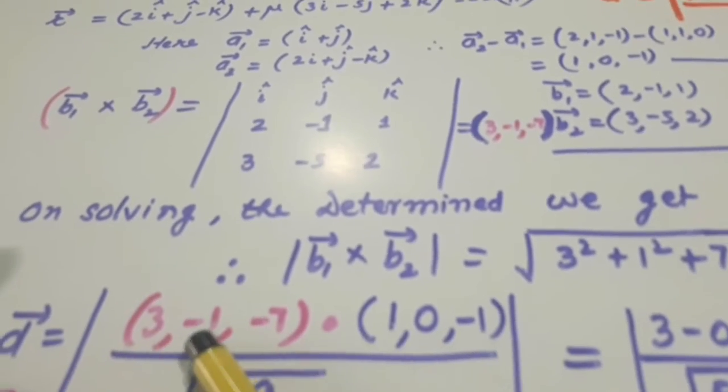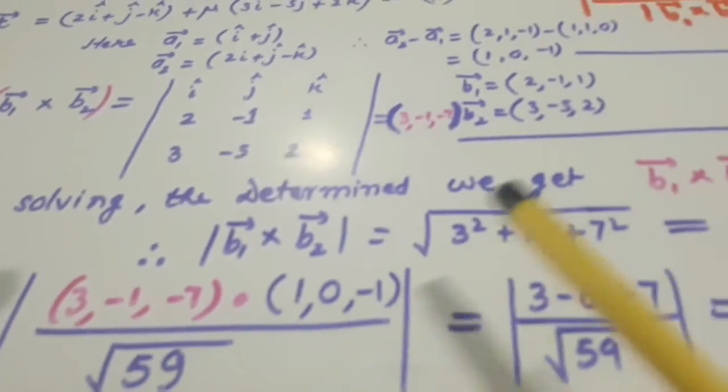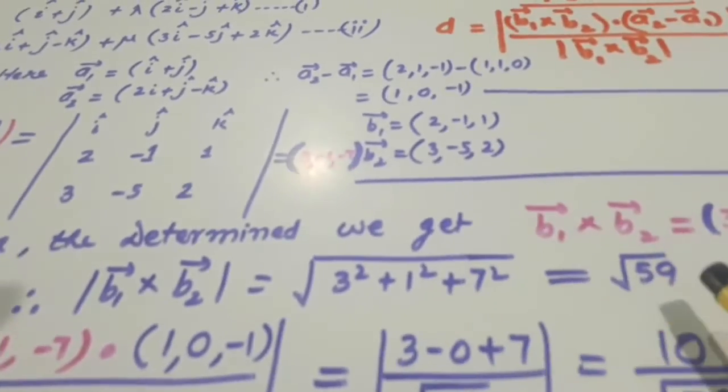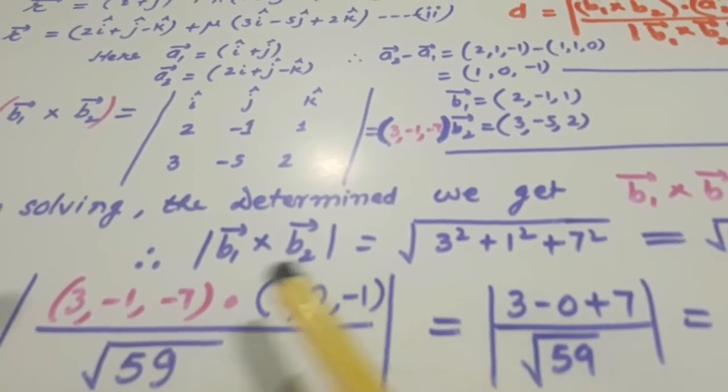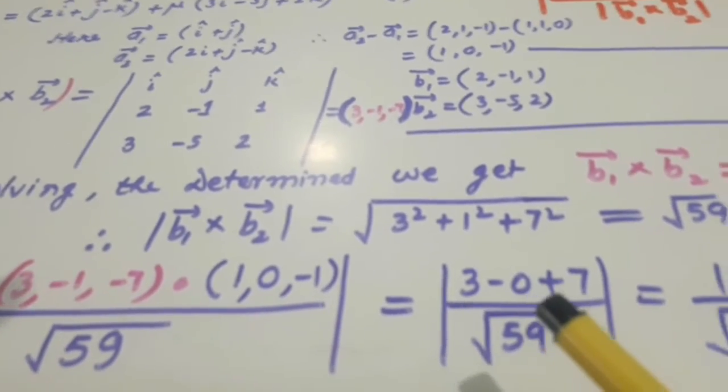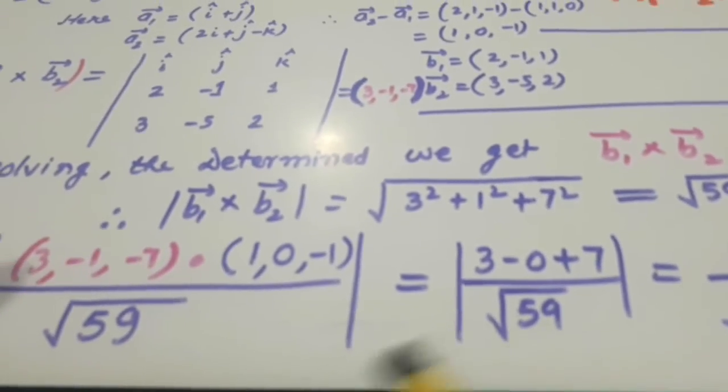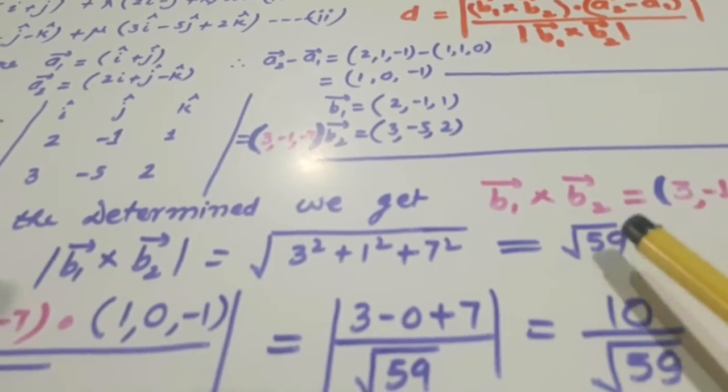And its magnitude, I have calculated here, it is root 59. So on having dot product, we will get this 10 and the magnitude is root 59. So the answer will be 10 over root 59.